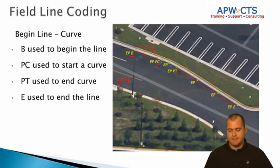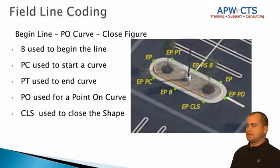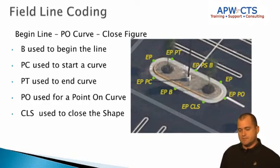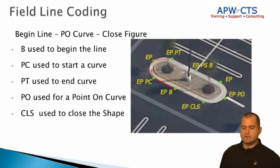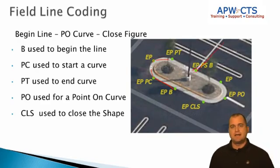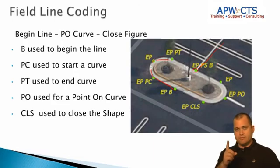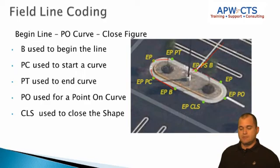Here's an example with an island. I don't like to start on the curve, so I start in the middle of the straight section and go up to a point coded EP PC, then use a three-point curve going around with a PT. At the next point I'm double coding — putting EP and also PSB, telling it to begin the parking stripe at that same shot. So at one point I can have EP, space, PS for parking stripe, and then B to begin that line, then continue shooting the rest of the edge of pavement.